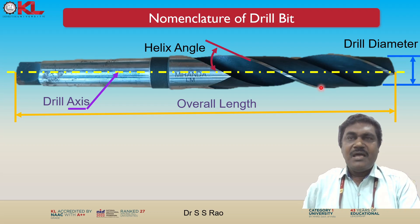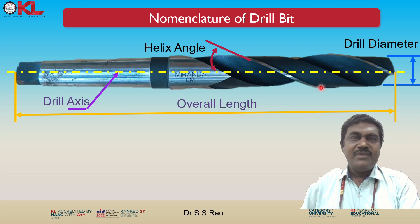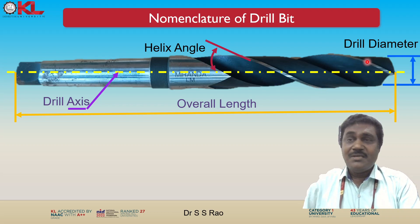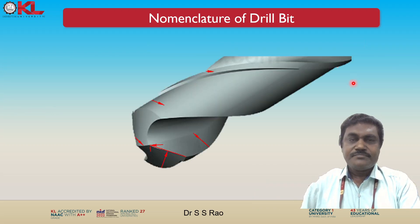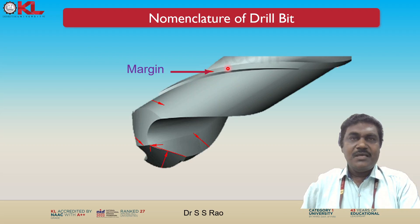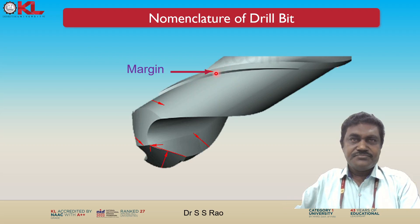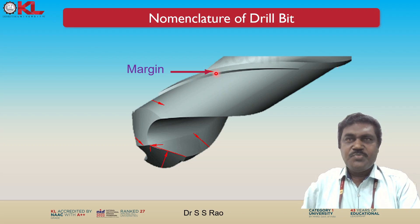Now the drill diameter. The drill diameter represents the width of the hole that the drill bit will produce. It is typically measured across the outermost edge of the cutting lips. The drill diameter is the measurement of the diameter of the hole that can be made.